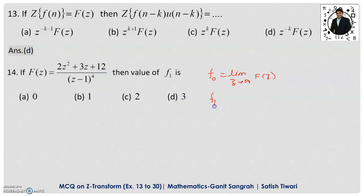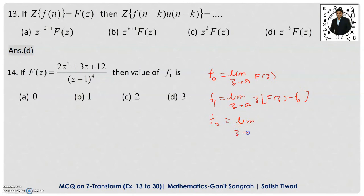Similarly, f(1) equals limit z tending to infinity of z times [F(z) − f(0)]. And f(2) equals limit z tending to infinity of z² times [F(z) − f(0) − f(1)·z⁻¹]. You have to remember this formula to find any term of the sequence — f(0), f(1), f(2), f(3).